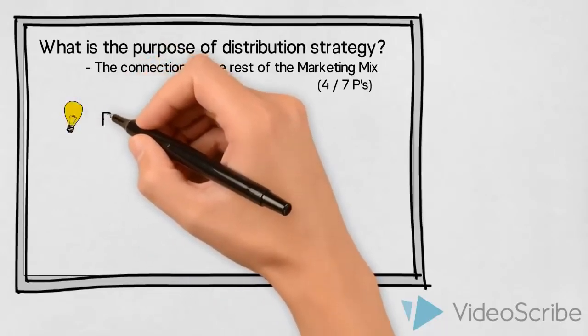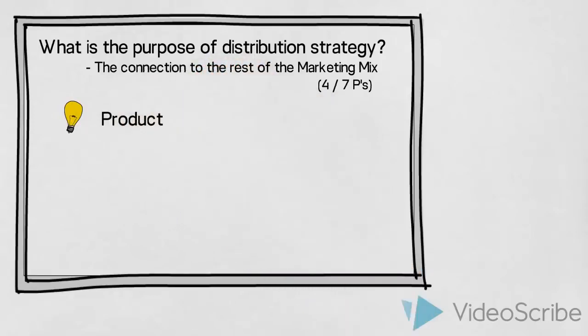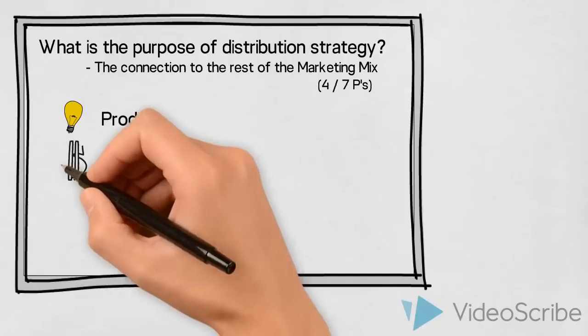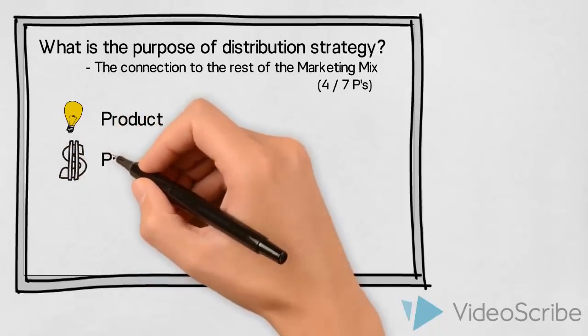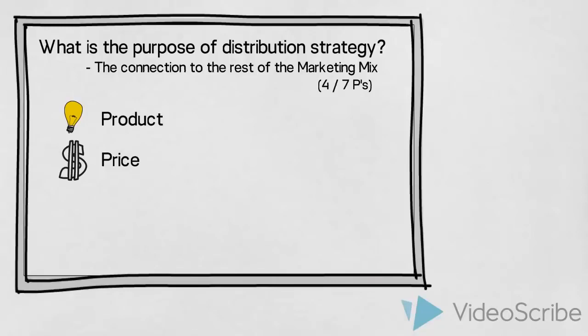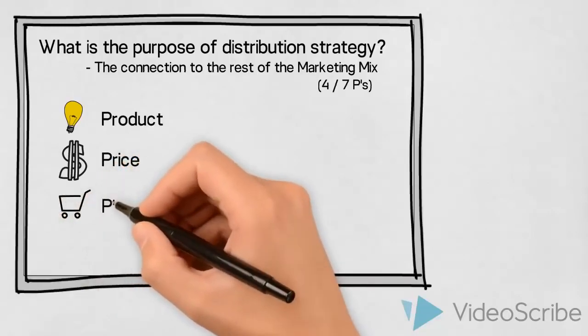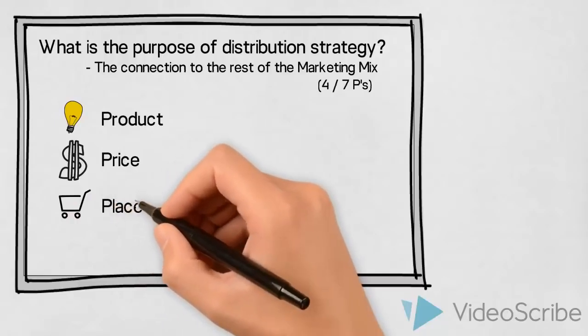First of all, any issues concerning the product—this would include packaging and all other elements in connection with the product. Secondly, a decision on price. Thirdly, you will need to decide on the place, which is what this video will address.